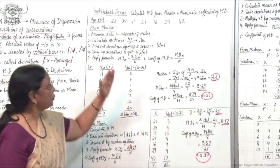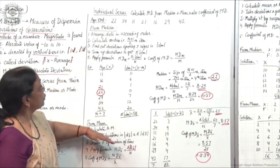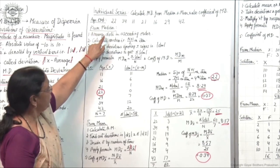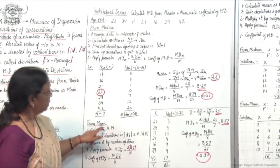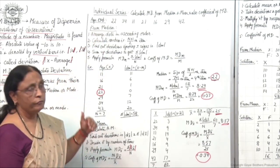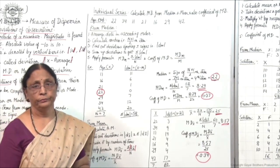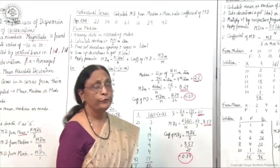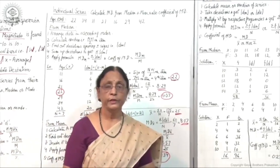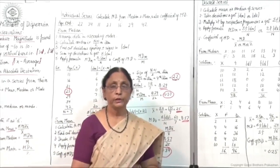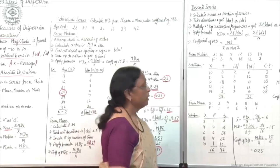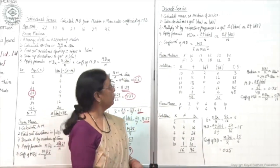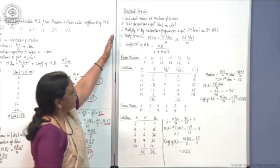So this way in the case of individual series, you can calculate mean deviation from median as well as from mean, following the steps and formula accordingly. Now we will move to discrete series — the second type of series. In discrete series, frequencies are given.